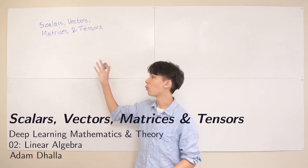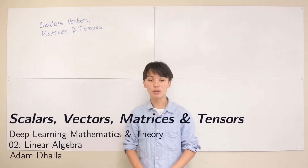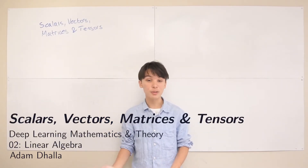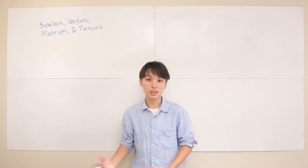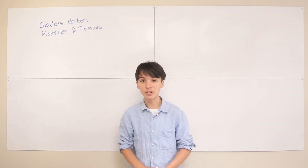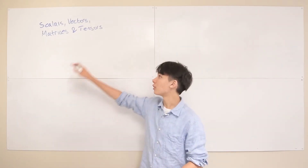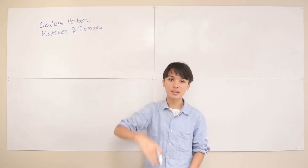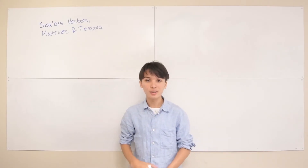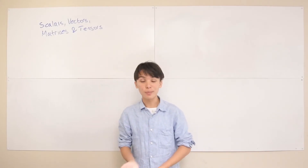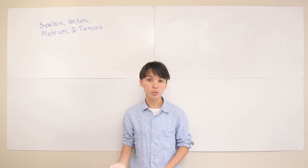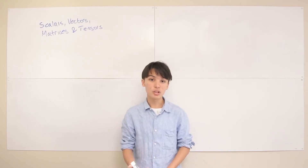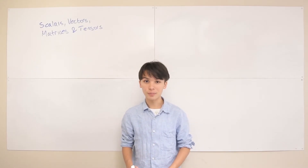In this lecture I'm going to talk about the four main mathematical objects we'll encounter throughout this course, and really in machine learning and linear algebra in general, which are scalars, vectors, matrices, and tensors. This goes with chapter 2.1 of the deep learning textbook that this course is accompanied with, so I suggest you read that after watching this lecture.